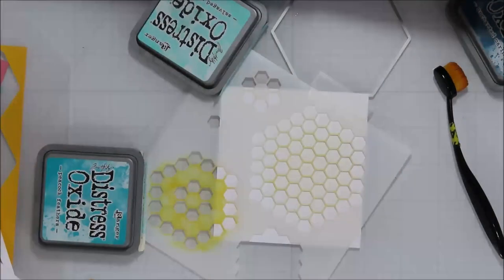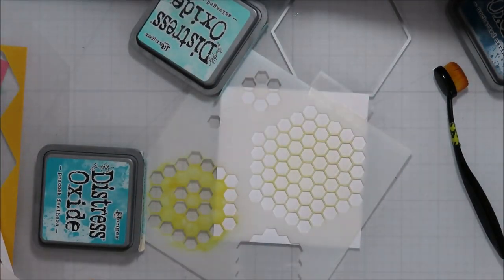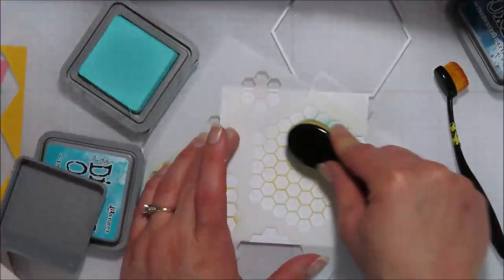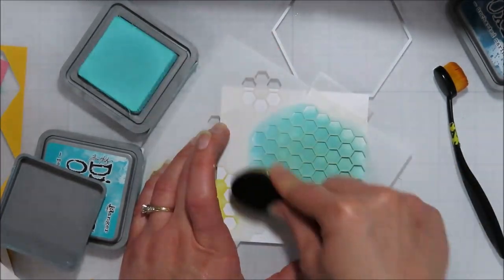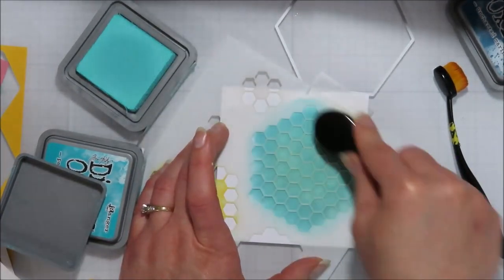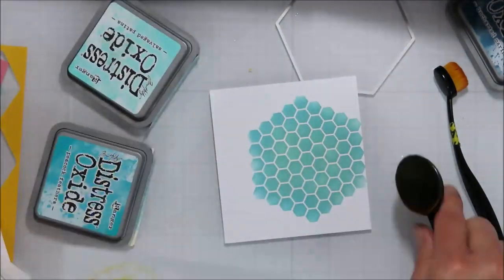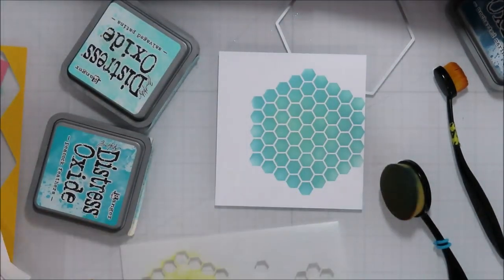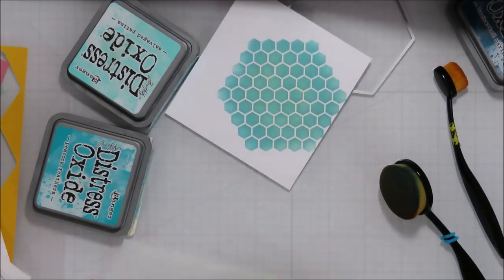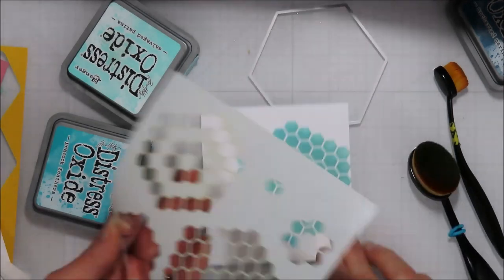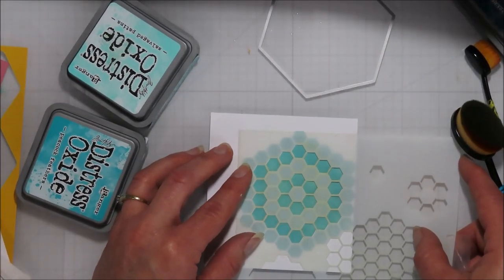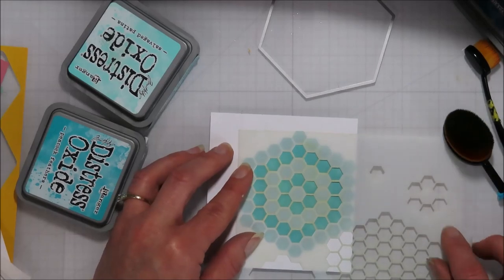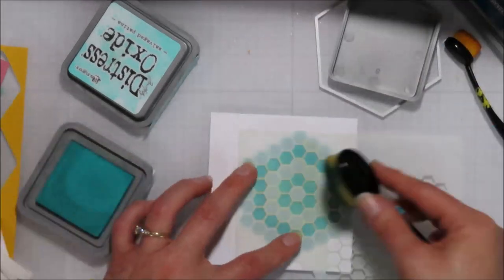I'm starting by inking up that largest honeycomb shape on the stencil. I'm going to start with the salvaged patina as my base color here, and then bring in... I need to clean my actual stencil better, because I didn't clean it when I was done with it last time.